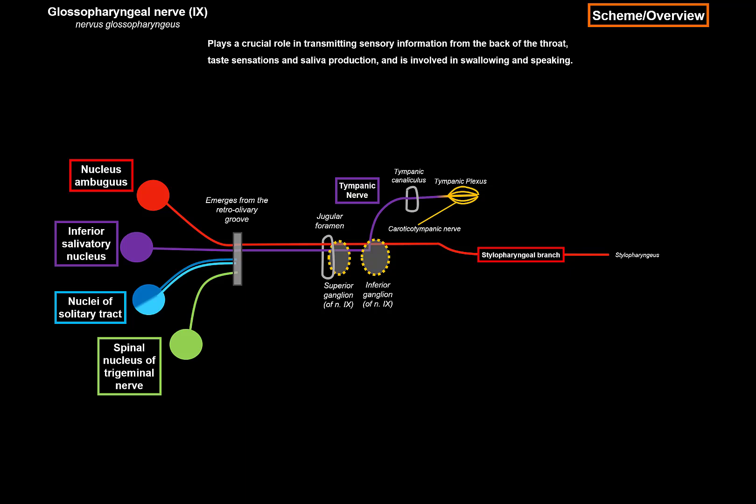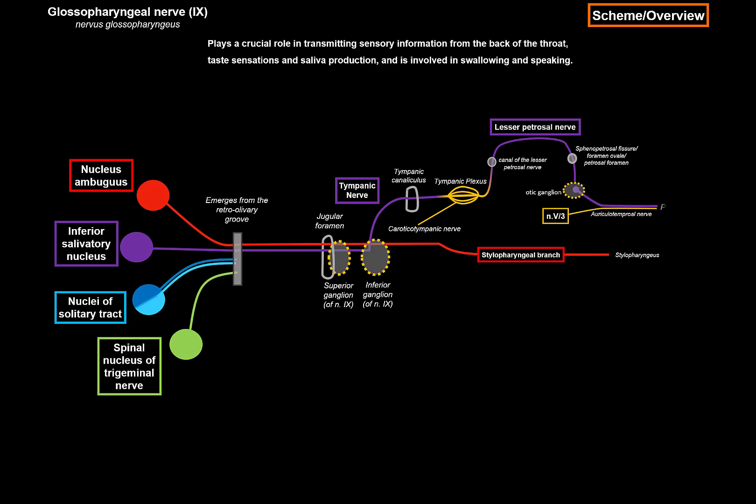The tympanic plexus is formed with two other nerves: the sympathetic carotico-tympanic nerve from the internal carotid plexus, and a communicant branch from the facial nerve. From the plexus, the parasympathetic lesser petrosal nerve exits, passes through the canal of the lesser petrosal nerve, and leaves the cranium through the sphenopetrosal fissure, foramen ovale, or petrosal foramen. This nerve provides preganglionic parasympathetic innervation to the otic ganglion, which then sends postganglionic fibers via the auriculotemporal nerve to innervate the parotid gland and stimulate saliva production.